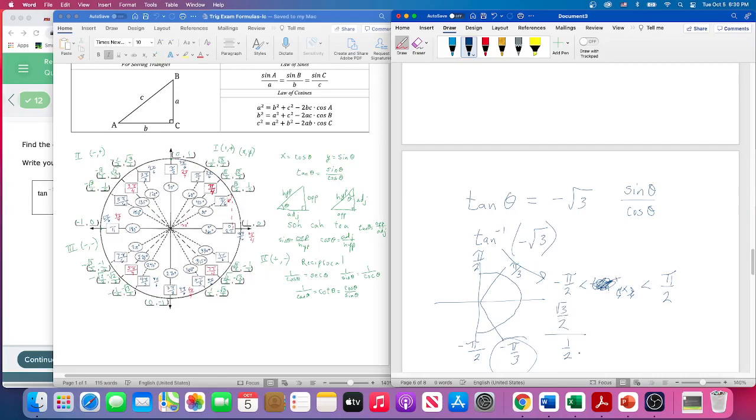The sine is square root of 3 over 2, and when you do the math on this, the sine is actually negative. Negative square root of 3 over 2 divided by 1 half—remember you flip and multiply—so that's 2 over 1. The 2's cancel.